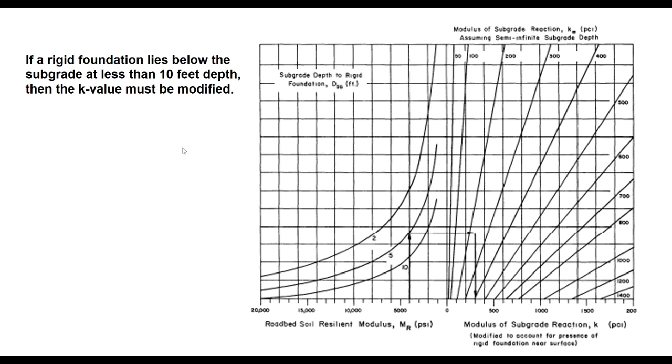The earlier chart assumes that rigid foundation is beyond 10 feet depth. But if rigid foundation lies below subgrade at less than 10 feet depth, then the k value must be modified, and this chart is used to get the effective k value for rigid foundation.